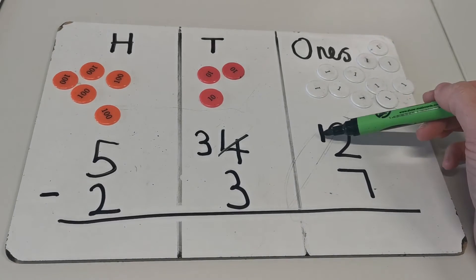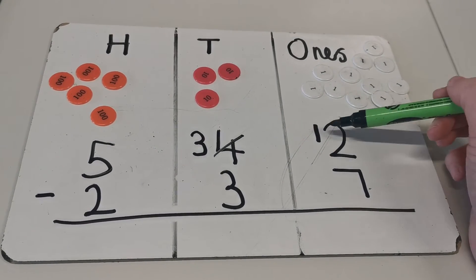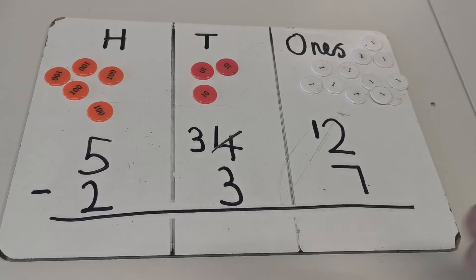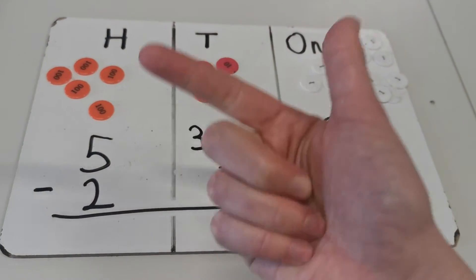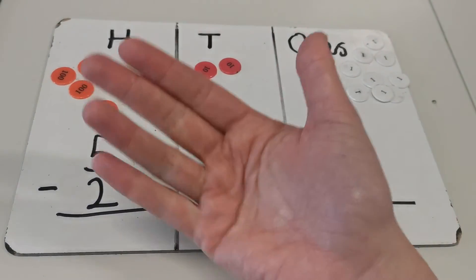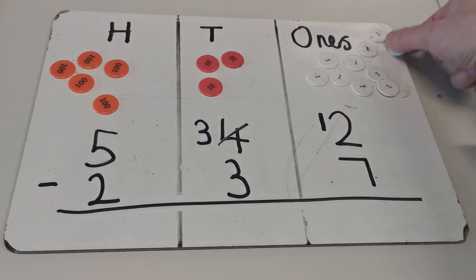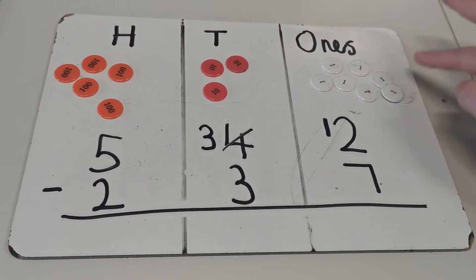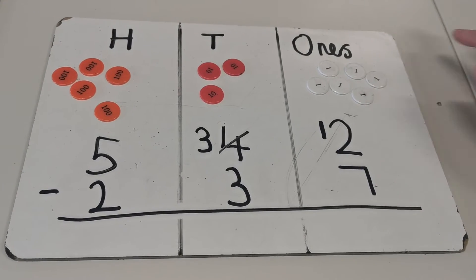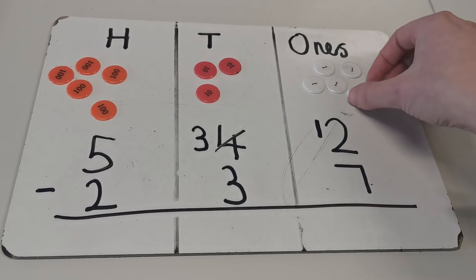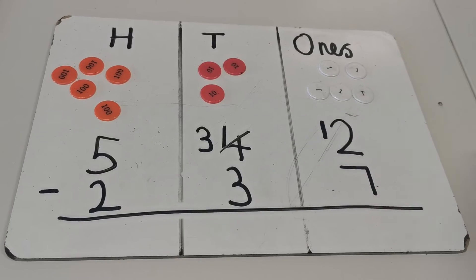So now I have twelve subtract seven: eight, nine, ten, eleven, twelve. So I now have five ones: one, two, three, four, five, six, seven. And now you can see that I'm left with five ones.